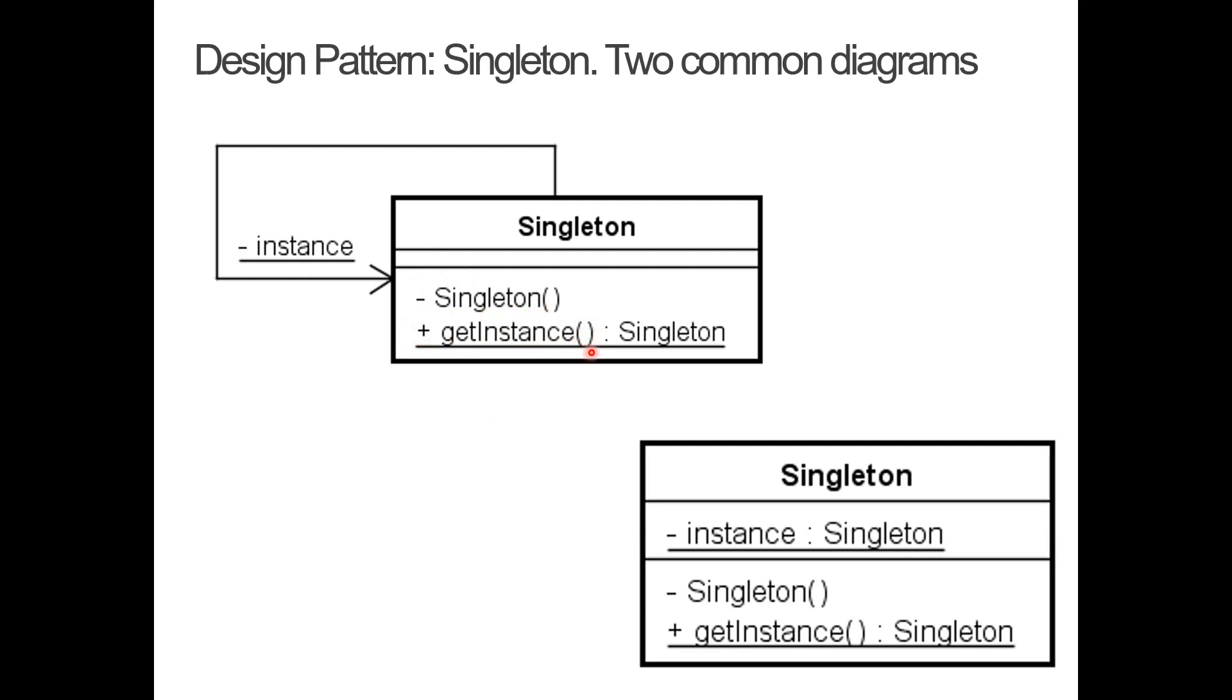I have a private constructor. I have a getInstance method. You can call this whatever you want. GetInstance is conventional, I guess. It returns a variable of type singleton, the same as the class. And it is static underlined here. I also have a private instance, private field variable. I call it instance. It is static. And it is of the type singleton. There is a reference to itself. It says the same thing down here.